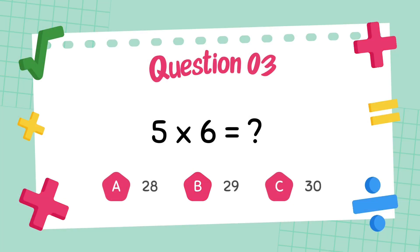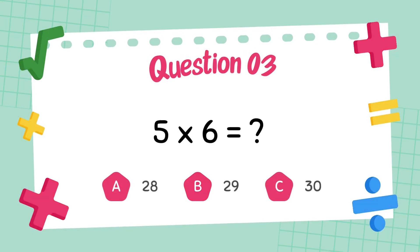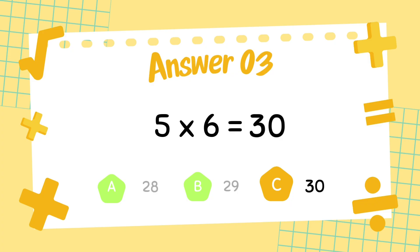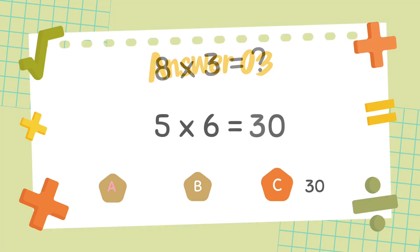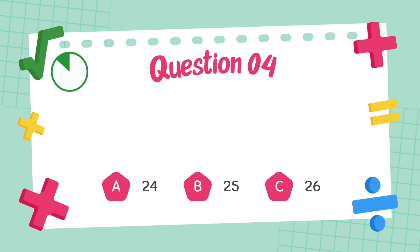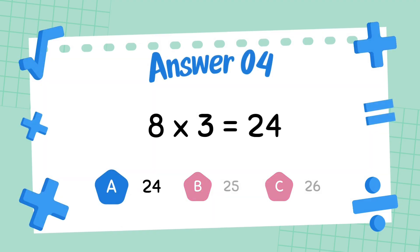What is 5 multiply 6? The answer is 30. What is 8 multiply 3? The answer is 24.